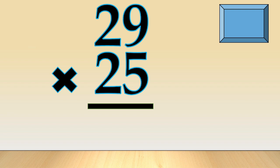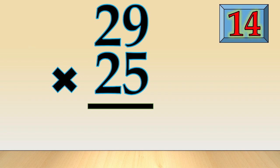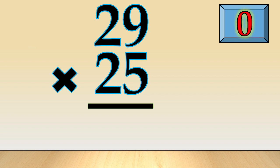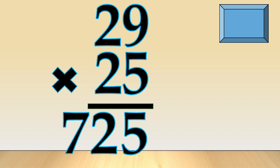29 times 25. Times up. 29 times 25 is equal to 725.